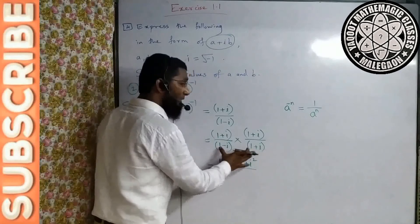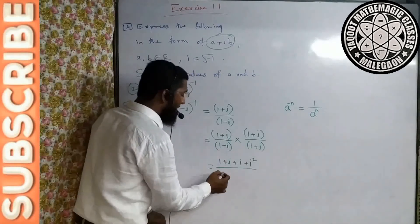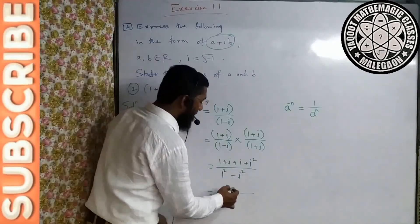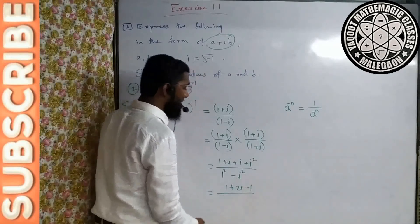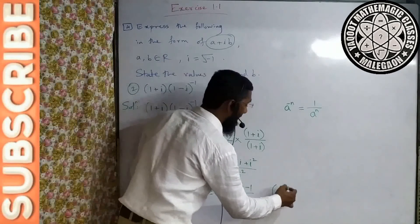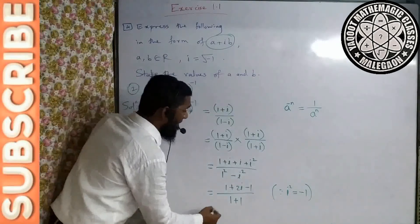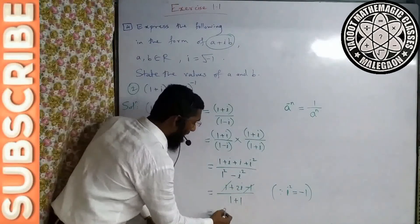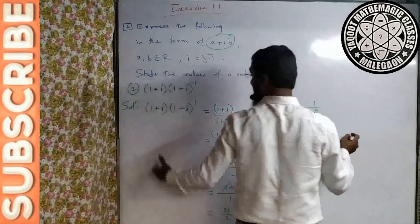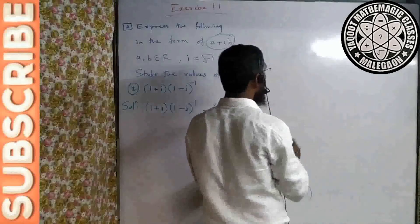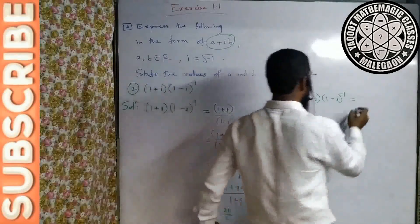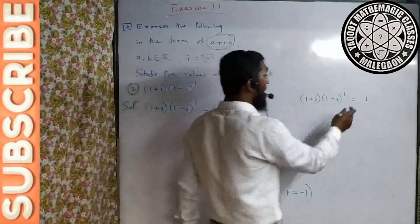Denominator mein (1 − i)(1 + i) = a² − b² = 1 − i² = 1 − (−1) = 2. Numerator: 1 + i + i + i² = 1 + 2i + (−1) = 2i. So we get 2i divided by 2. Since i square is equal to minus 1, the +1 and −1 cancel. 2 bhi cancel ho jaata hai — result hai i.